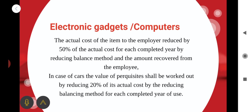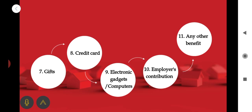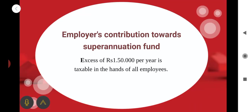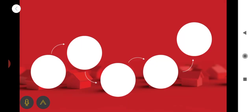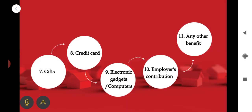The next is gadgets — computers and electronic gadgets, as discussed before under movable assets. The actual cost of the item to the employer is reduced by 50% of the actual cost for each completed year using the reducing balance method — that is the written-down value method — for each completed year of use. That is the perquisite value. Next: employer's contribution to the fund — that is the superannuation fund. Excess of rupees 1,50,000 per year is taxable in the hands of all employees; up to ₹1,50,000 is exempted and the excess amount is taxable.